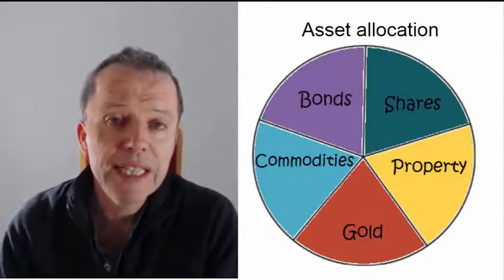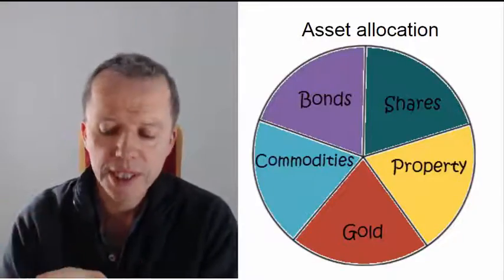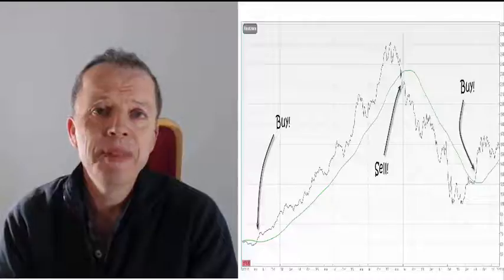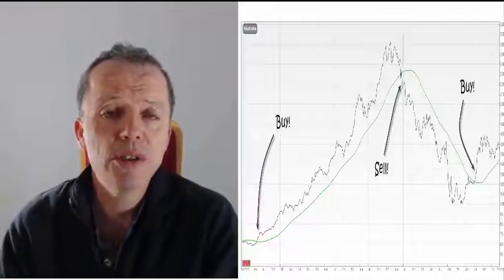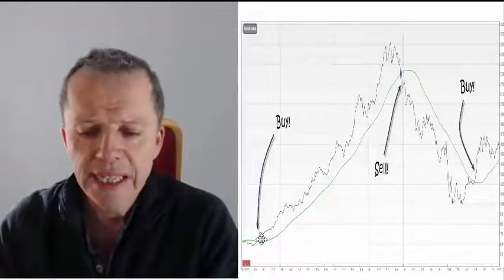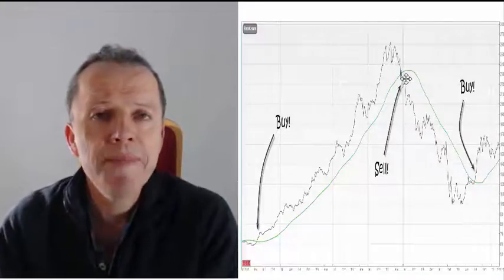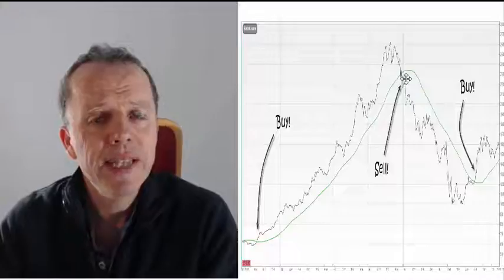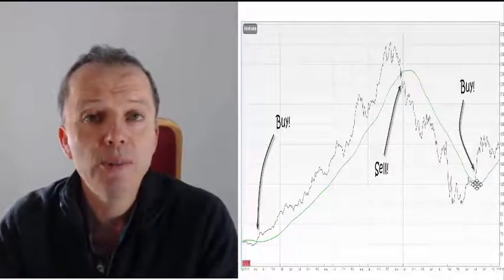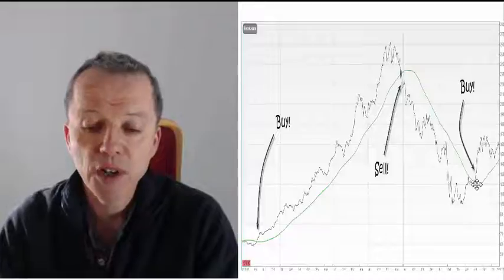What I do is divide my investment pot into five slices: shares, property, gold, commodities, and bonds. I use a very simple timing system to decide whether I want to be invested in that asset class or not. When the price rises up above the moving average for the year — the MA 52 — I invest and hold until the price drops below the MA 52, at which point I sell and turn the investment back into cash. I stay in cash until the asset class pops back up above the MA 52, at which point I reinvest.